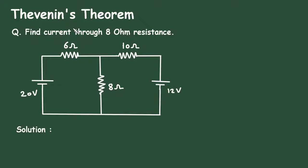To get the free nodes of electrical circuits, check the link in the comment section and install the app for free. Thevenin's theorem. Question: Find current through 8 ohm resistance. Here in this circuit, we have to find the current through this 8 ohm resistance by using Thevenin's theorem.